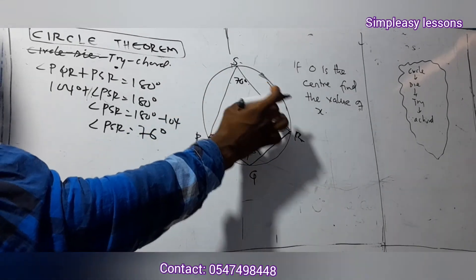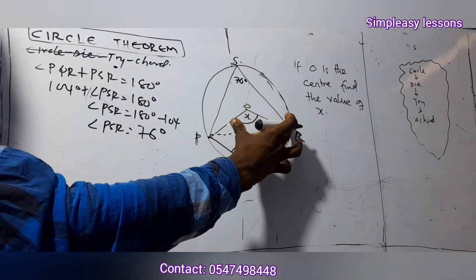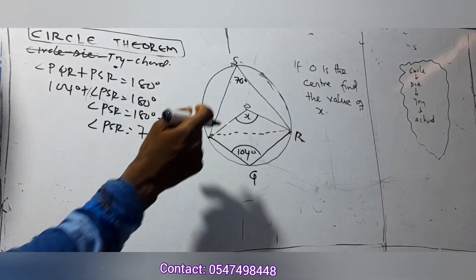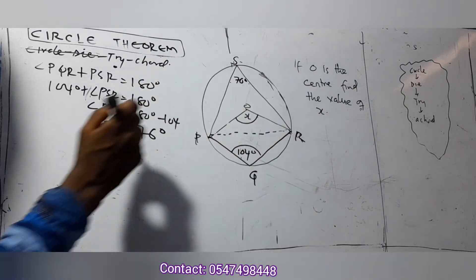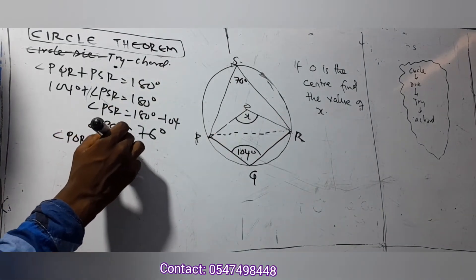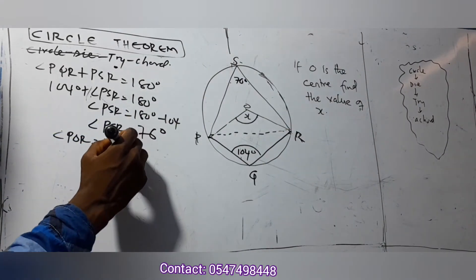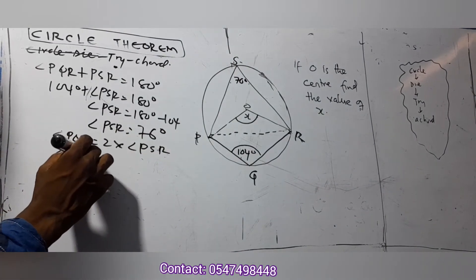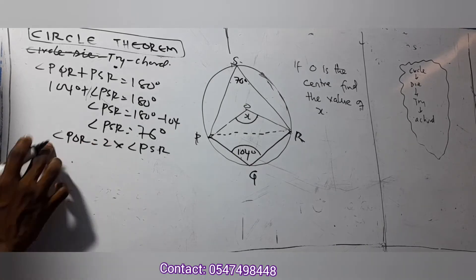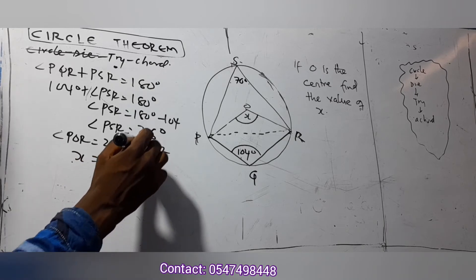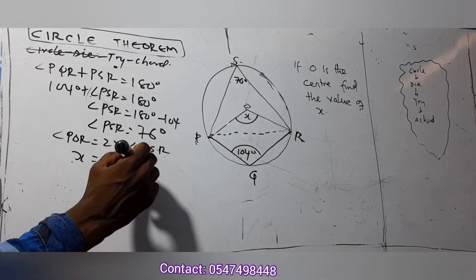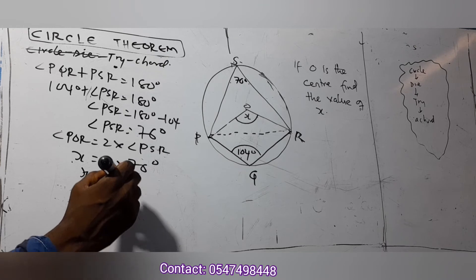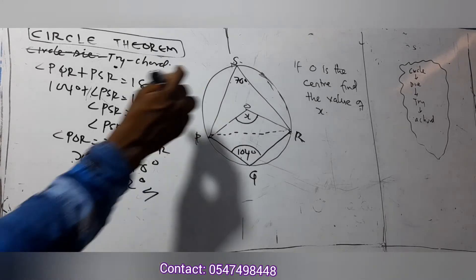Now applying SS: the same chord has one end going to the center (angle POR) and one going to the circumference (angle PSR), in the same direction. The one going to the center takes two times the one going to the circumference. So angle POR equals 2 times angle PSR, which is 2 times 76 equals 152 degrees. Therefore x equals 152 degrees.